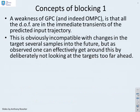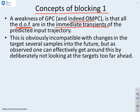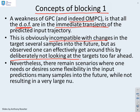First, concepts of blocking. There is some literature about blocking, but not a lot. One weakness of GPC — and the same applies to dual-mode algorithms — is that all the degrees of freedom are in the immediate transients of the predicted input trajectory. Your degrees of freedom are all now; you haven't got degrees of freedom in the long term. This is obviously incompatible with changes in the target which are several samples into the future. We can get round this by deliberately not looking at targets which are too far ahead, but there may remain scenarios where you actually need or desire some flexibility in the input predictions many samples into the future.